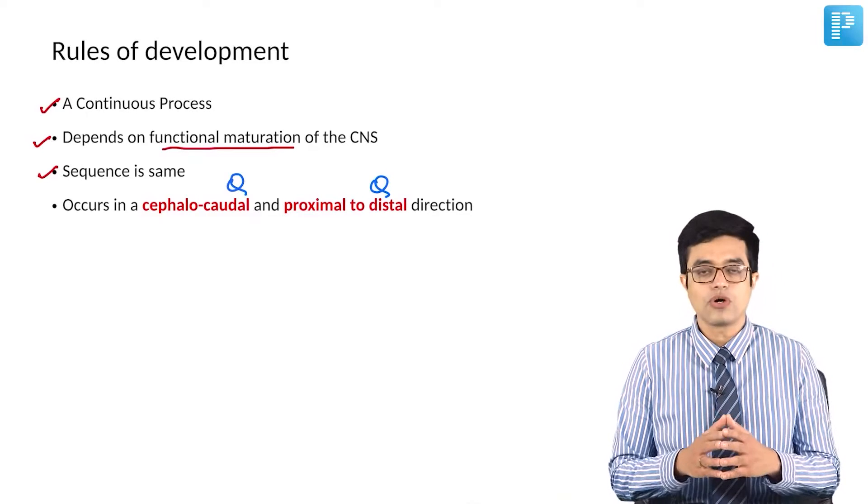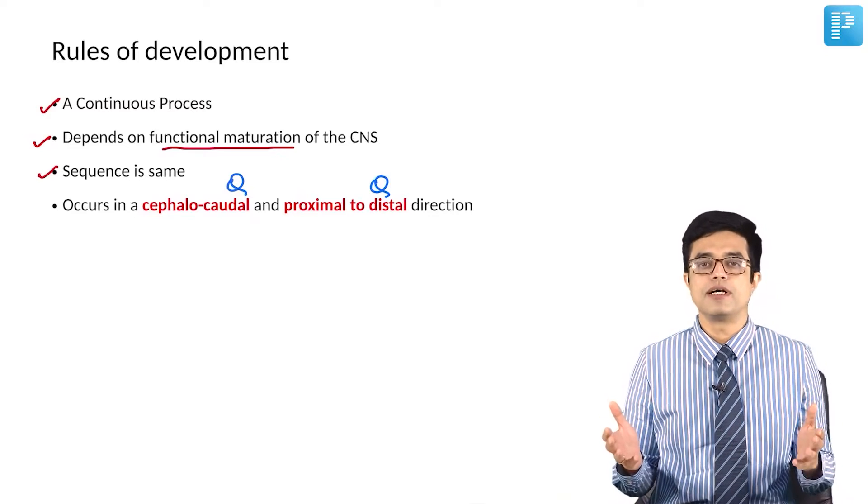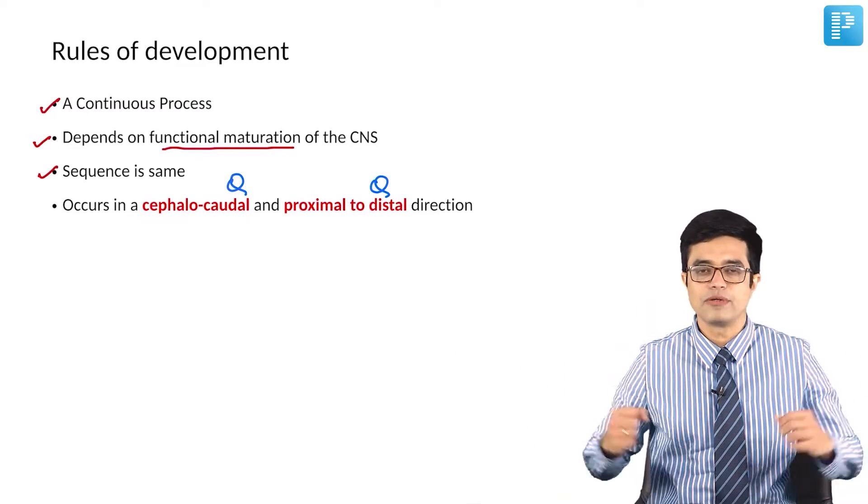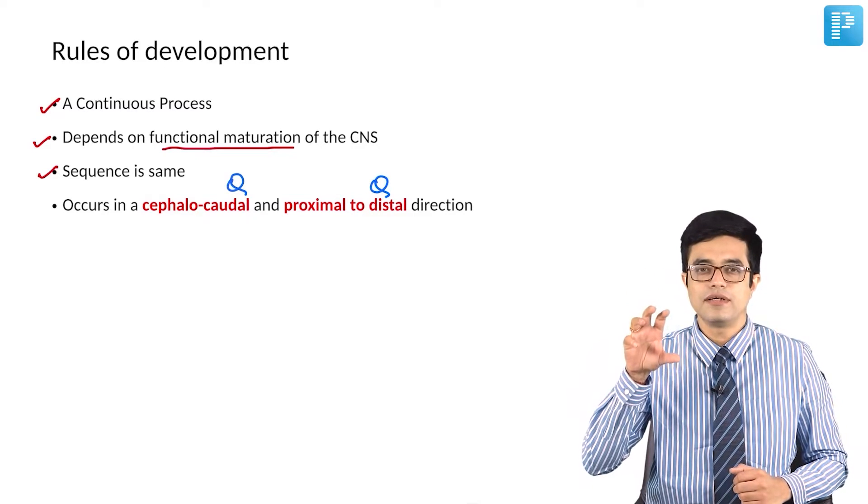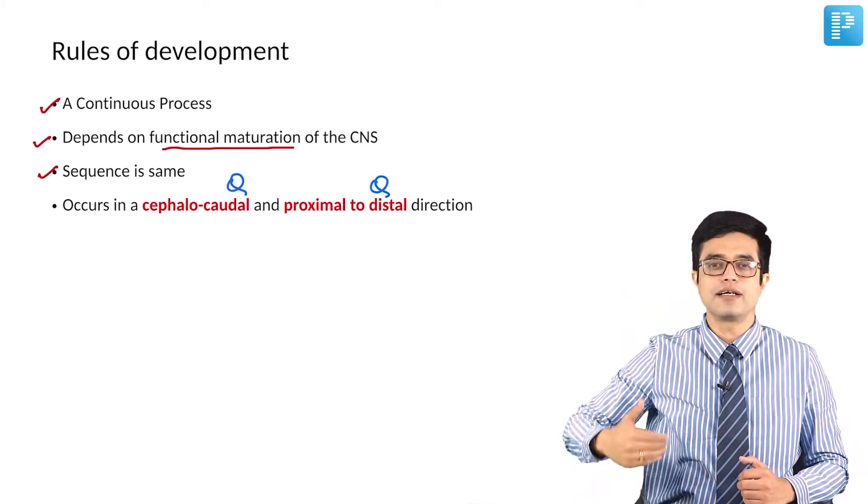The development occurs in a cephalocaudal and proximal to distal direction. What does it mean? There are two parts of a body: there is a central axis and there are the limbs. In the central axis, the development attainment first occurs in the upper part and then comes the lower part.